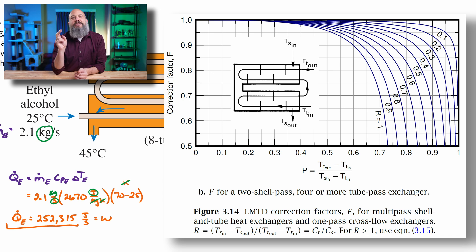So make sure you're looking at the correct figure for however many you have. In this case, we have two shell passes, eight tube passes. So I'm using the two shell pass, eight tube pass figure.